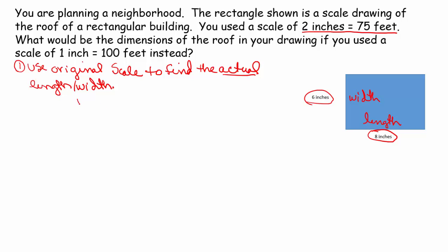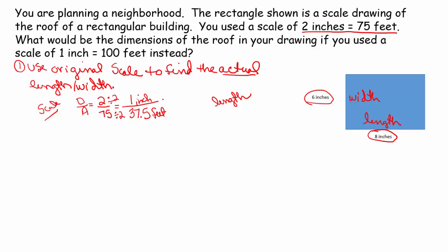We're going to do drawing over actual. I'm going to use the scale I was given to find the actual length. The scale I was given was 2 inches is 75 feet. You can either simplify this down — I normally like to find a unit rate. So I do 2 divided by 2 is 1, and 75 divided by 2 is 37.5. So my scale is 1 inch is 37.5 feet. Now I use that to find the actual length. The length they give me in the drawing is 8 inches.